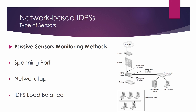The other method used by passive sensors is an IDPS Load Balancer. An IDPS Load Balancer is a device that aggregates and directs network traffic to monitoring systems, including IDPS sensors. A load balancer can receive copies of network traffic from one or more spanning ports or network taps and aggregate traffic from different networks. The load balancer then distributes copies of the traffic to one or more listening devices, including IDPS sensors, based on a set of rules configured by an administrator. The rules tell the load balancer which types of traffic to provide to each listening device.